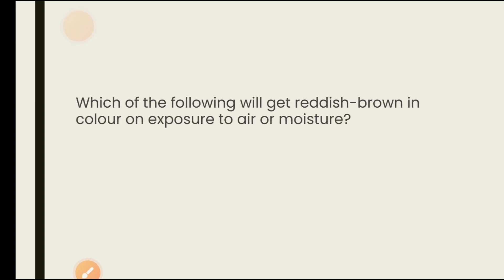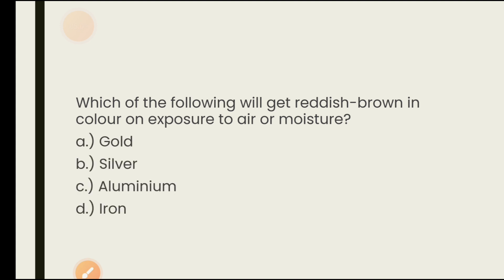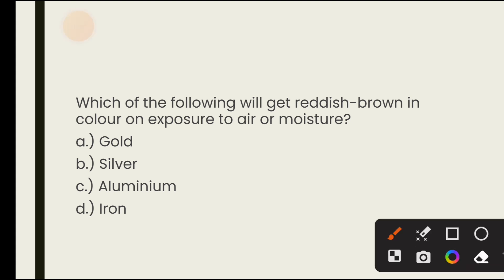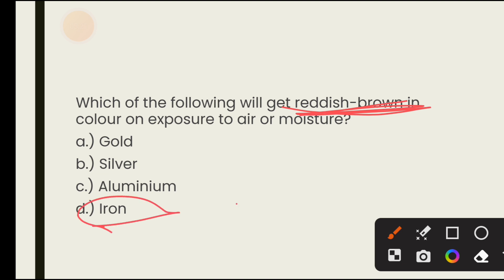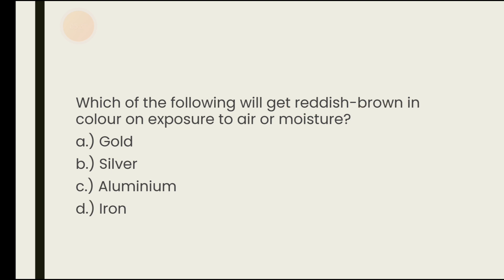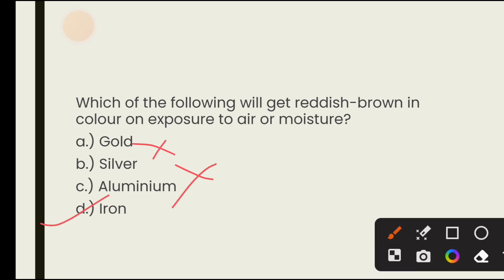Which of the following will get reddish brown in color on exposure to air or moisture? Options are gold, silver, aluminium, iron. Gold and silver are noble metals — rusting does not affect them. When iron is left open in the atmosphere for a few days, a red-brown layer forms on it, which we call rusting or corrosion. Gold, silver, and aluminium will not show this. The answer is iron. To prevent rusting, we perform galvanization.